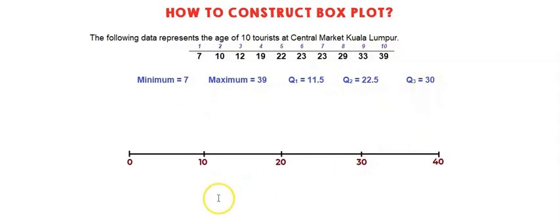Let's say here I have a scale of 0, 10, 20, 30, 40. Why until 40? Because our maximum value is 39. So this scale can fit our data from 7 until 39.